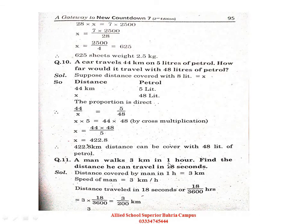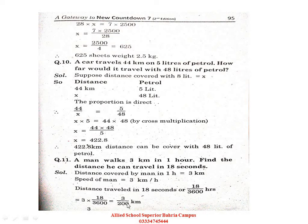A man walks 3 km in 1 hour. Find the distance he can travel in 18 seconds. Distance covered by man in 1 hour is 3 km. First, we need to convert hours to seconds: 18 seconds out of 3600 seconds in one hour. So we have 3 km and 18 seconds. The km that results: 3/200. This gives us a straightforward answer — these are easy questions you can solve easily.